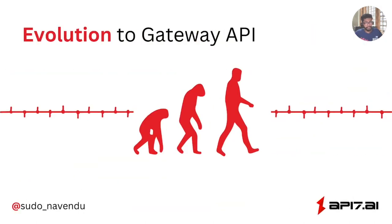Let's get on with today's topic. We are here to talk about the Gateway API. But to talk about the Gateway API, we need to understand how it has evolved, because the Gateway API is the result of a series of evolutions. It didn't just come out of the box, so I think it is important to understand this evolution.